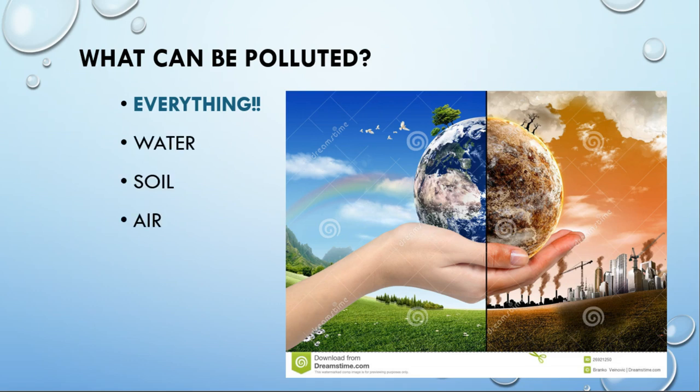When we think about pollution, we traditionally think about water pollution, air pollution, even ground and soil pollution. But don't forget that we can change the temperature of water, we can change the climate, we add noise and light to the ecosystem. So really, in the grand scheme of things, everything can be degraded — everything can be polluted.